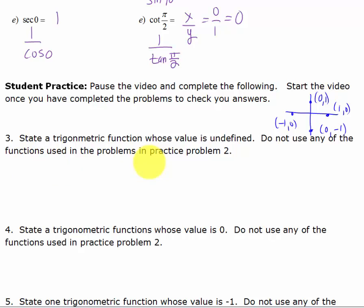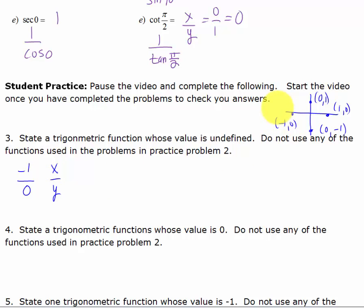State a trigonometric function whose value is undefined, not using any functions from practice 2. If I want something to be undefined, I need the denominator to be 0. For example, if I choose negative 1 over 0, the point negative 1, 0 is at pi, where x is negative 1 and y is 0. Since x over y is cotangent, the cotangent of pi would be undefined.